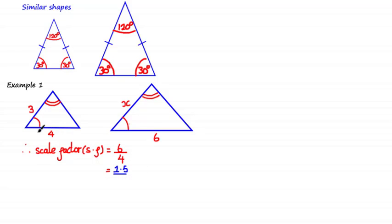By looking at the angles and the sides of this triangle, you should be able to see that this side is similar to this side. As the scale factor is a multiplier, we can work it out by asking what number do we need to multiply by 4 to get 6. This can be done by dividing 6 by 4, which gives 1.5. So to scale the length of 4 to 6, we multiply 4 by 1.5. Because these shapes are similar, 1.5 is the scale factor for all sides of the triangle.